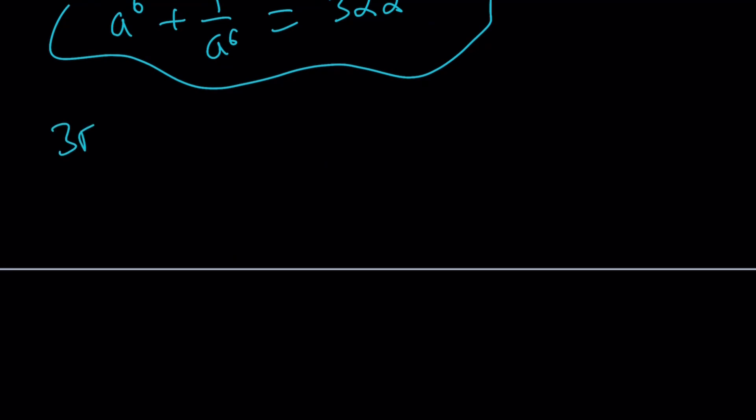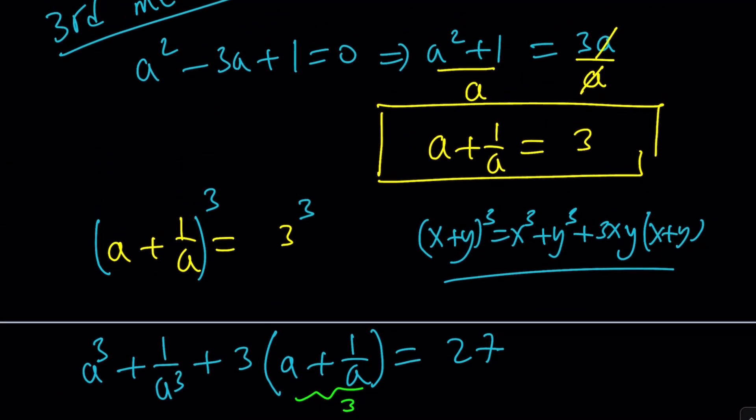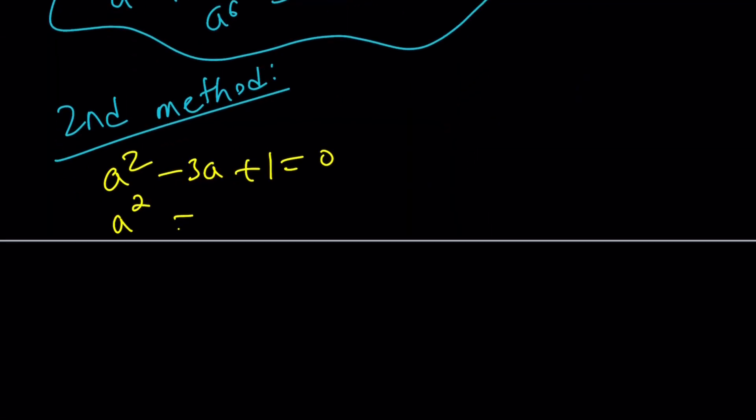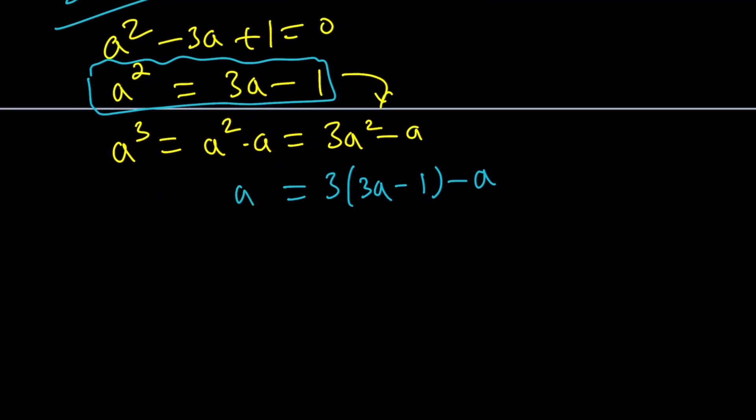Let's go ahead and take a look at the second method. a squared minus 3a plus 1 equals 0. Now remember, with the second approach, we isolated a squared plus 1 because we wanted to divide by a and get the sum of reciprocals. This time, we're going to isolate the highest power. This is a general method with polynomials. So from a squared, we're going to go to the sixth power. We're just going to multiply both sides by a. So a cubed is a squared times a, which is 3a squared minus a. But a squared can always be written. Replace a squared with 3a minus 1 all the time and simplify the resulting expression. This is going to be 9a minus a, which is 8a minus 3.